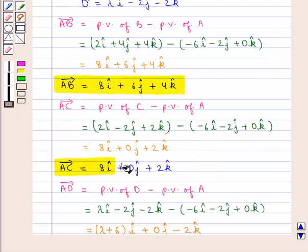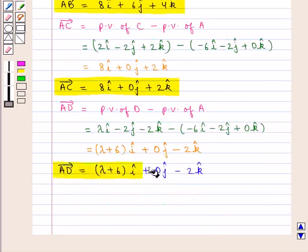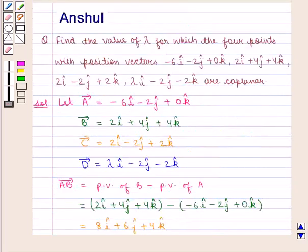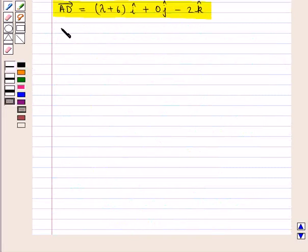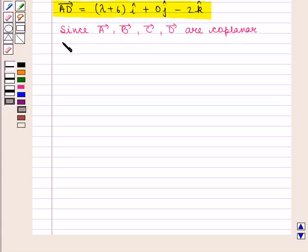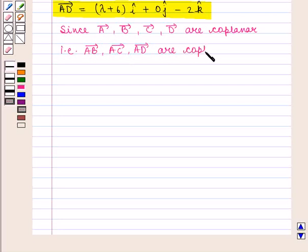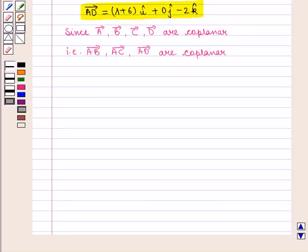So we have vector AB equal to 8i plus 6j plus 4k, vector AC equal to 8i plus 0j plus 2k, and vector AD equal to lambda plus 6 i plus 0j minus 2k. Since the four points A, B, C, D are coplanar, we apply the coplanarity condition.